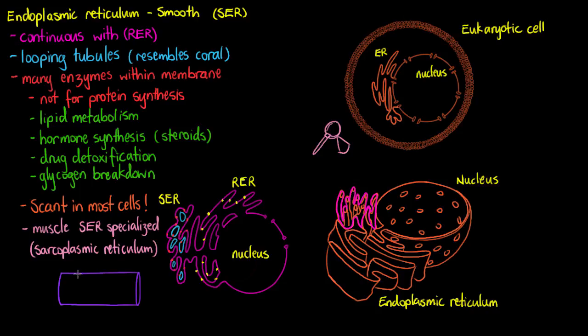Now you may have heard of a sarcoplasmic reticulum before, and I'll draw up a little picture here. So if we have this myofibril within a muscle cell, we're going to have this sarcoplasmic reticulum wrapping around it. And this sarcoplasmic reticulum is just a specialized smooth endoplasmic reticulum, and the role that the sarcoplasmic reticulum has within the muscle cells is to sequester and store calcium ions.